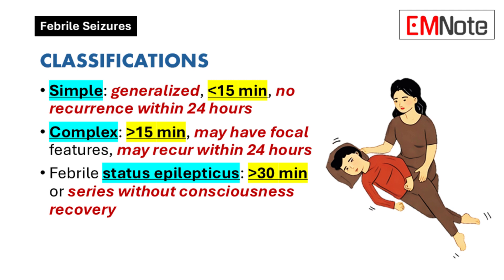Complex febrile seizures are a little trickier. They might last longer than 15 minutes, they might just involve one part of the body, or they could recur within that 24-hour window. And then there's febrile status epilepticus — that's a whole other ballgame, much more serious. This is when a seizure lasts for more than 30 minutes, or if a child has multiple seizures without regaining consciousness in between.